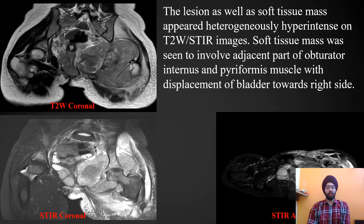On T2-weighted images, the lesion as well as the soft tissue mass appeared heterogeneously hyperintense on T2-weighted and STIR images. The soft tissue mass was seen involving the adjacent obturator internus and piriformis muscles, with displacement of the bladder towards the right side.